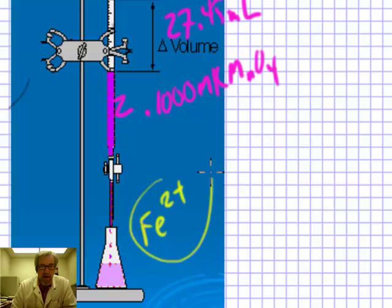So what's in the flask? Well, in the flask, we have Fe2+, but we don't know how much. And that's our objective. We have to figure out how many moles of Fe2+ were in there to react with this 27.45 milliliters of KMnO4. We will need a balanced chemical equation to figure this out, so let's first work on getting a balanced chemical equation.